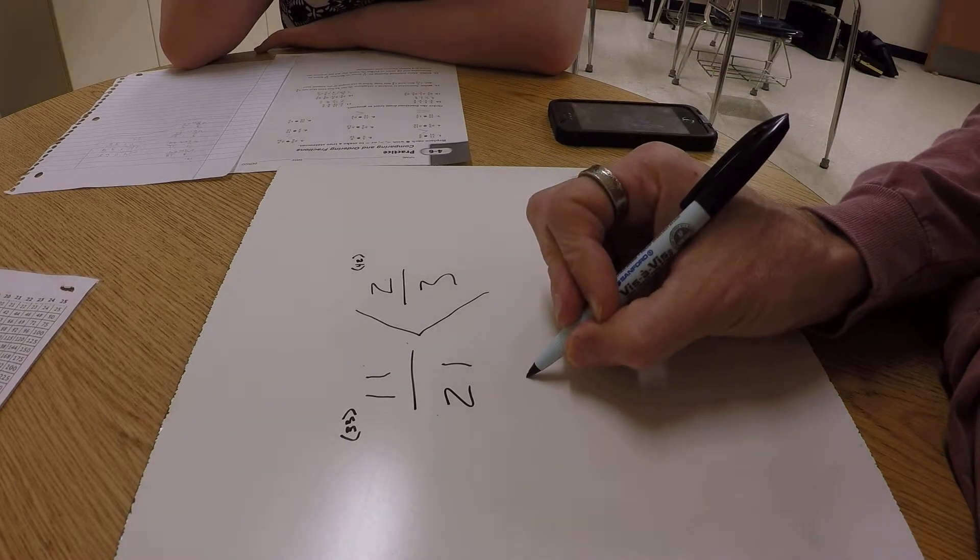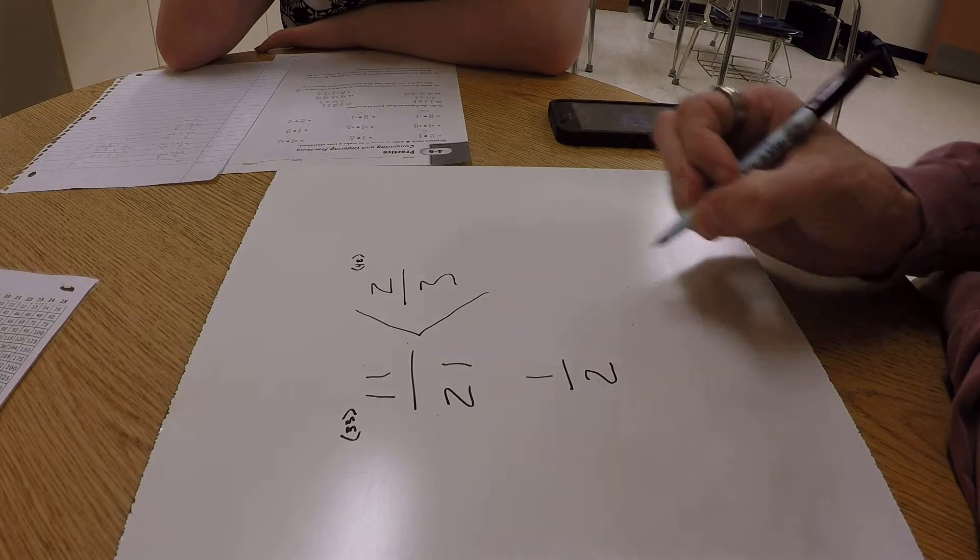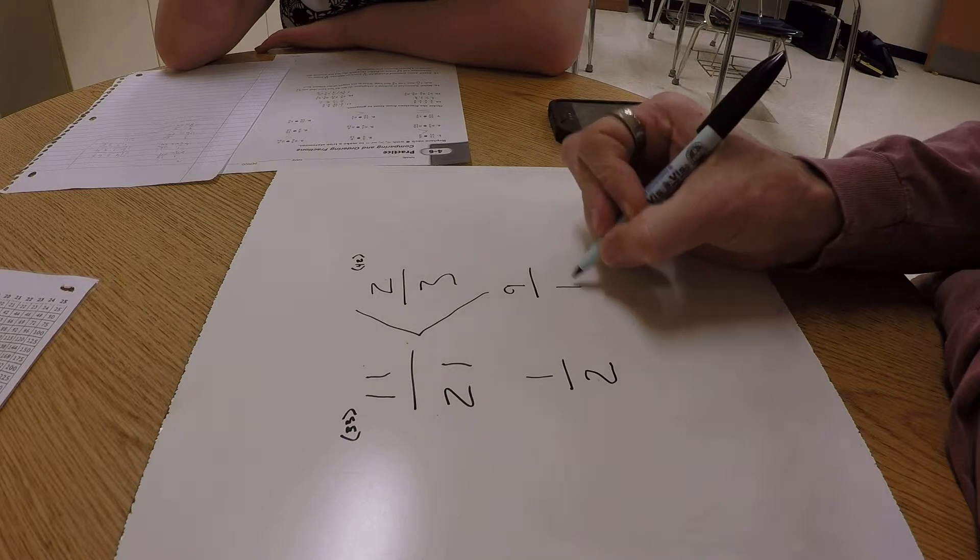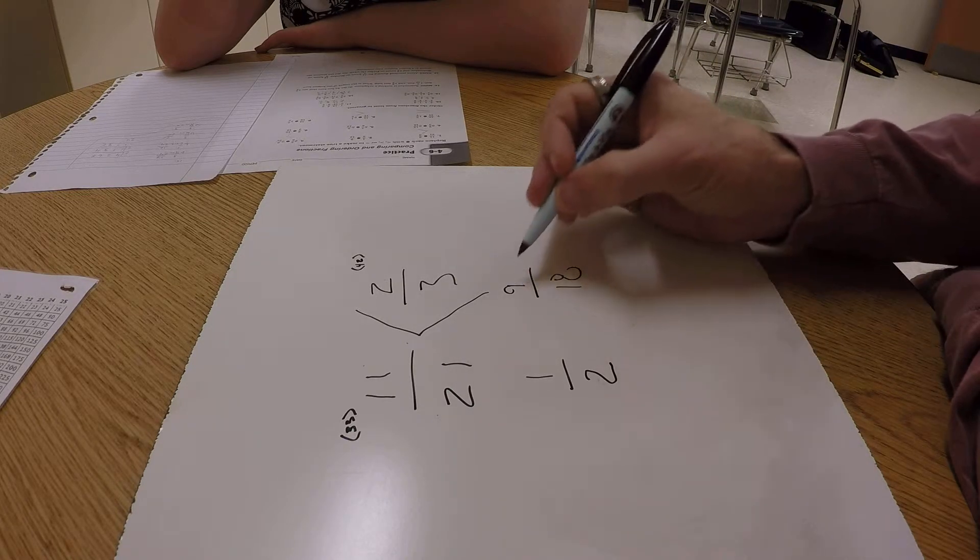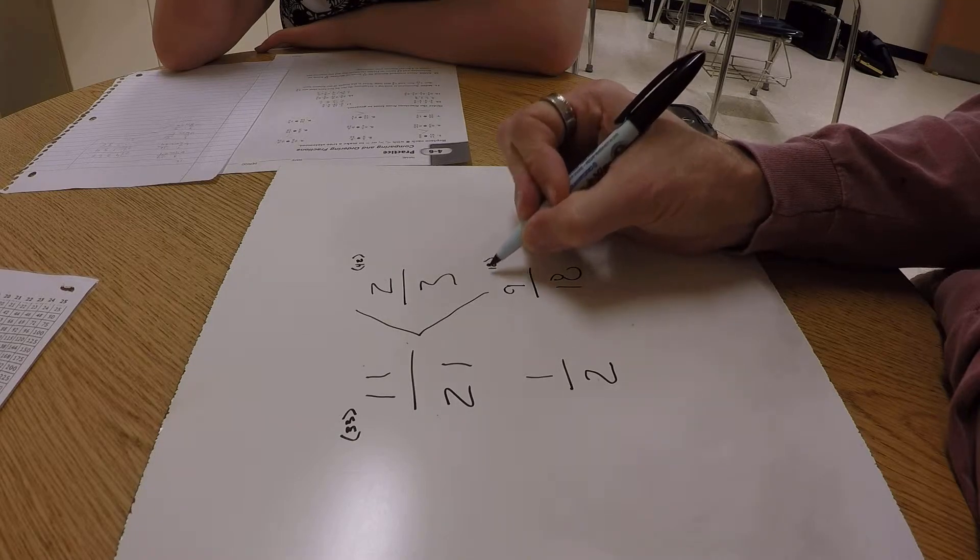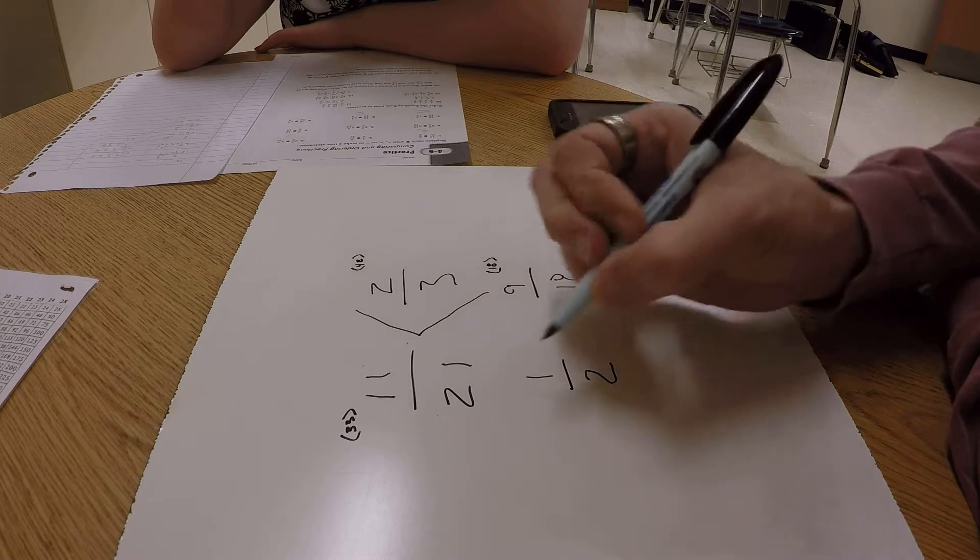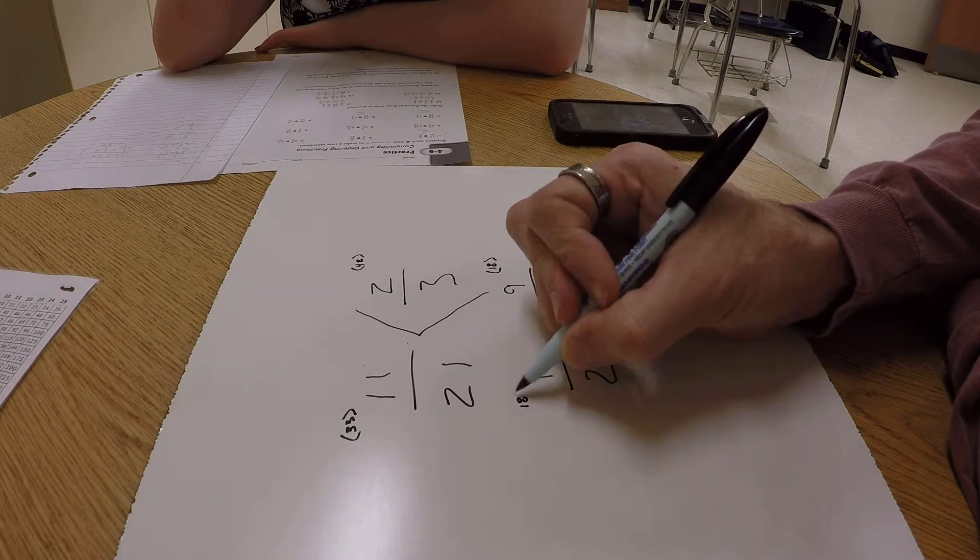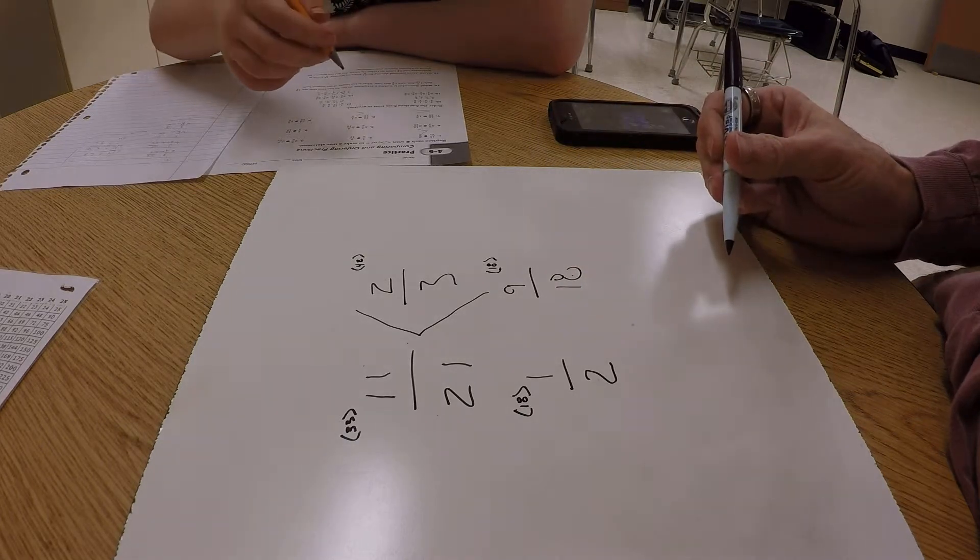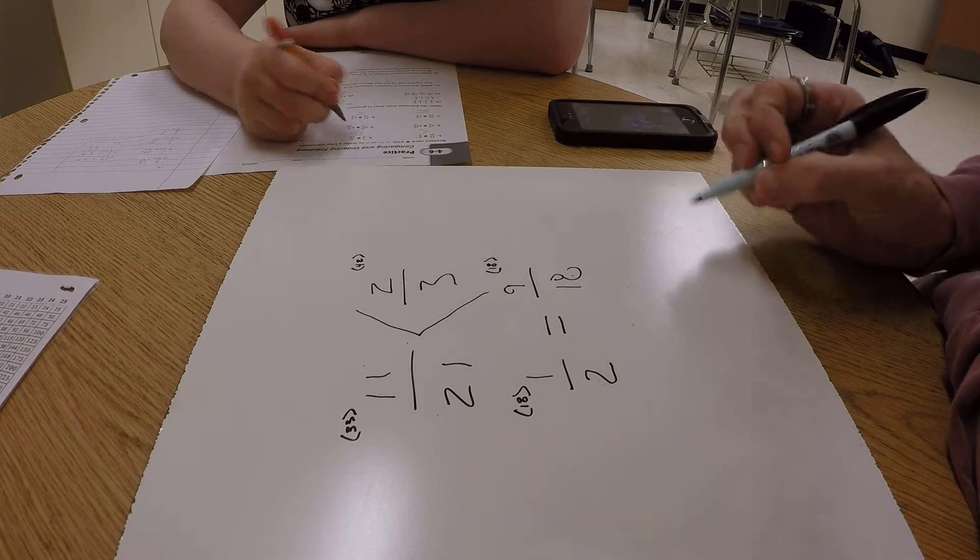Let's do 1/2 and we're going to compare that to 9/18. Cross multiply: 2 times 9 is 18, I'll put it in parentheses, and 18 times 1 is 18. So I have 18 versus 18, so those two fractions are going to be equal.